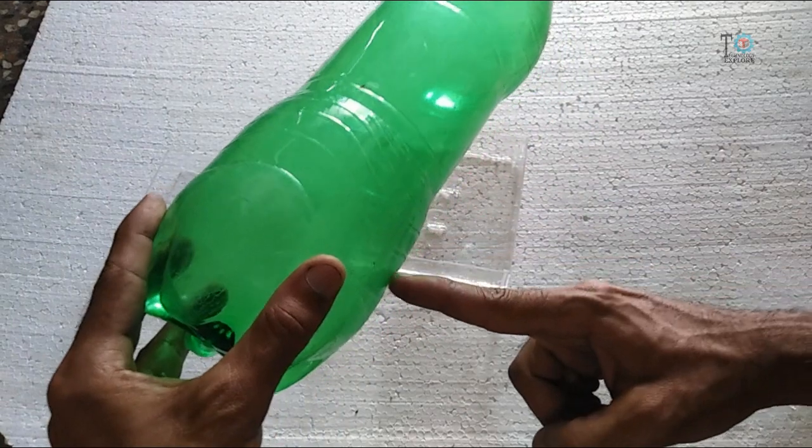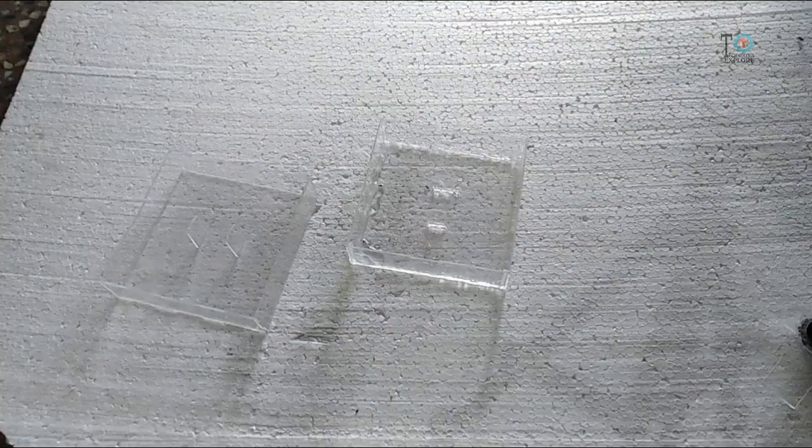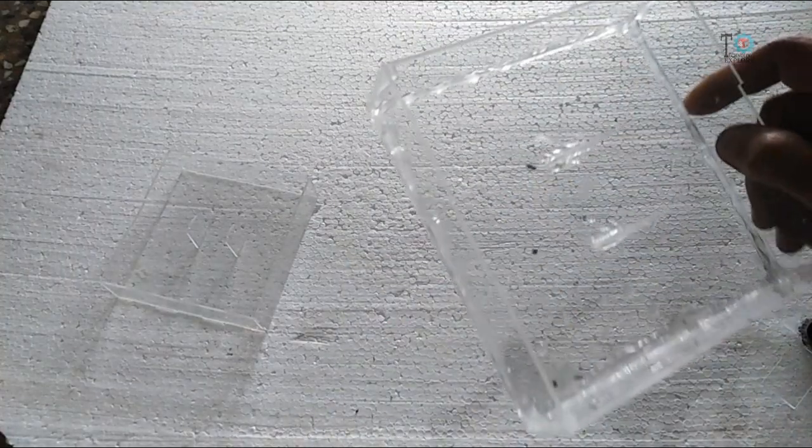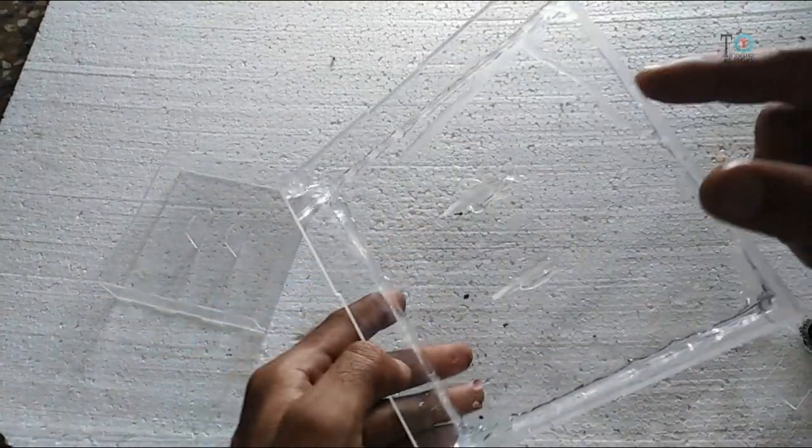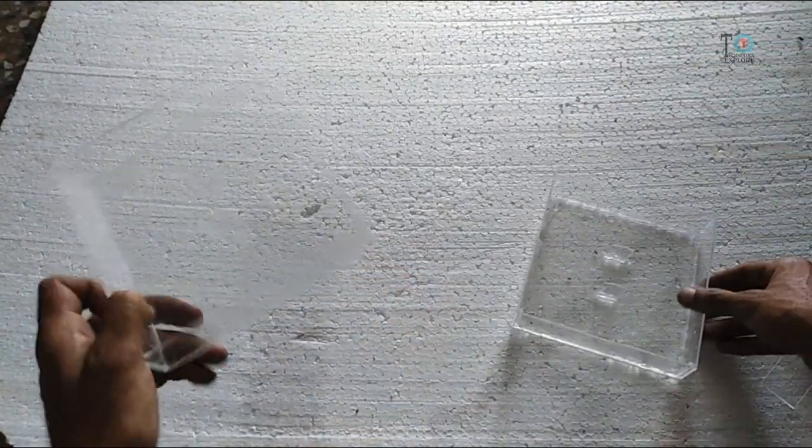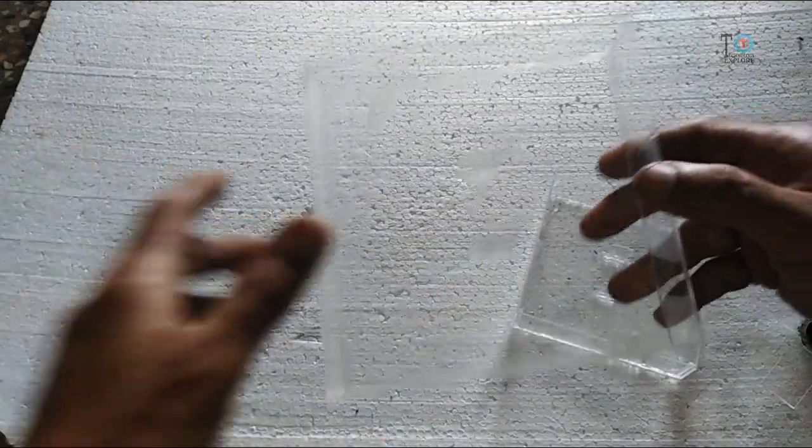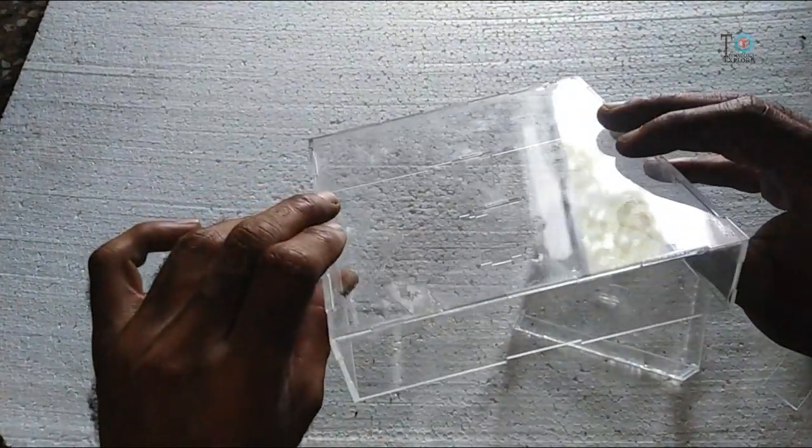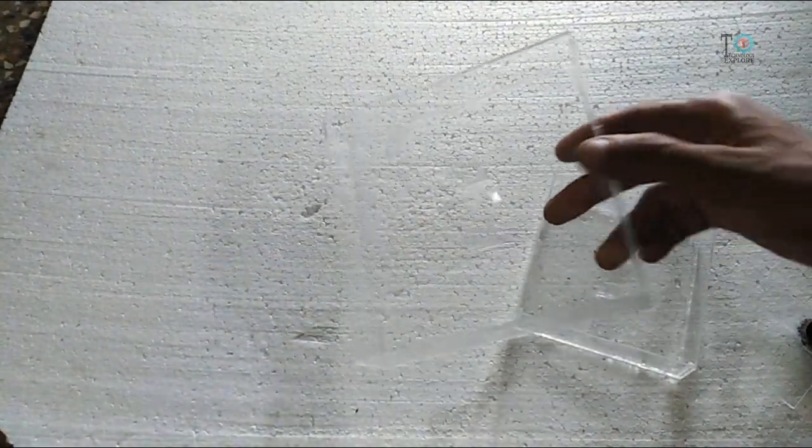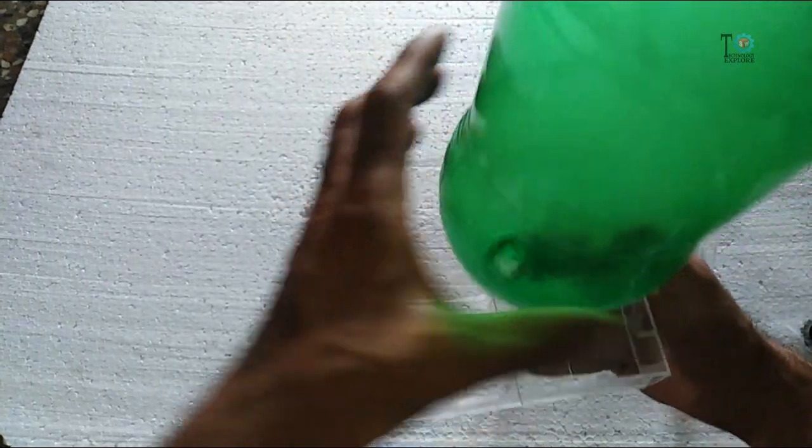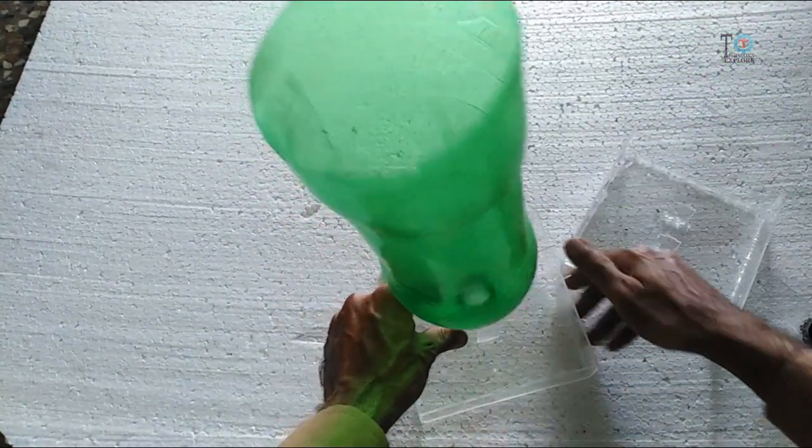So now cut the bottle base from here and this bottle will be used to feed grains to birds. So now I have made two pots - one is used for feeding water and the another one will be used to feed grains to birds. Now attach the top acrylic plate with the pots with the help of permanent glue.